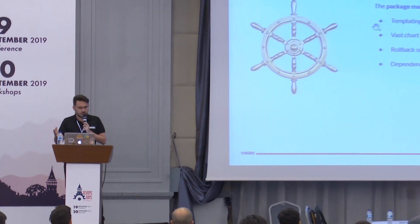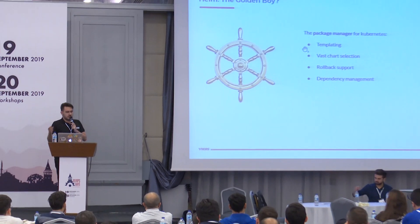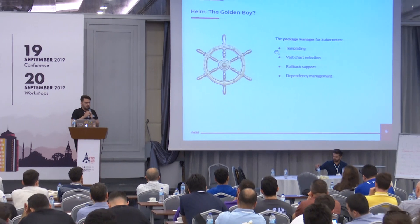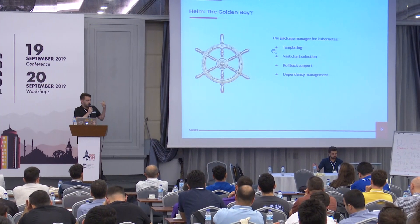In the community, you check the sources — you find Helm, Ksonnet, Kapitan, all the tools — and when you check the stars, you realize the golden boy is Helm. Because Helm has templating, chart selection, rollback support, dependency management — that's some good stuff.